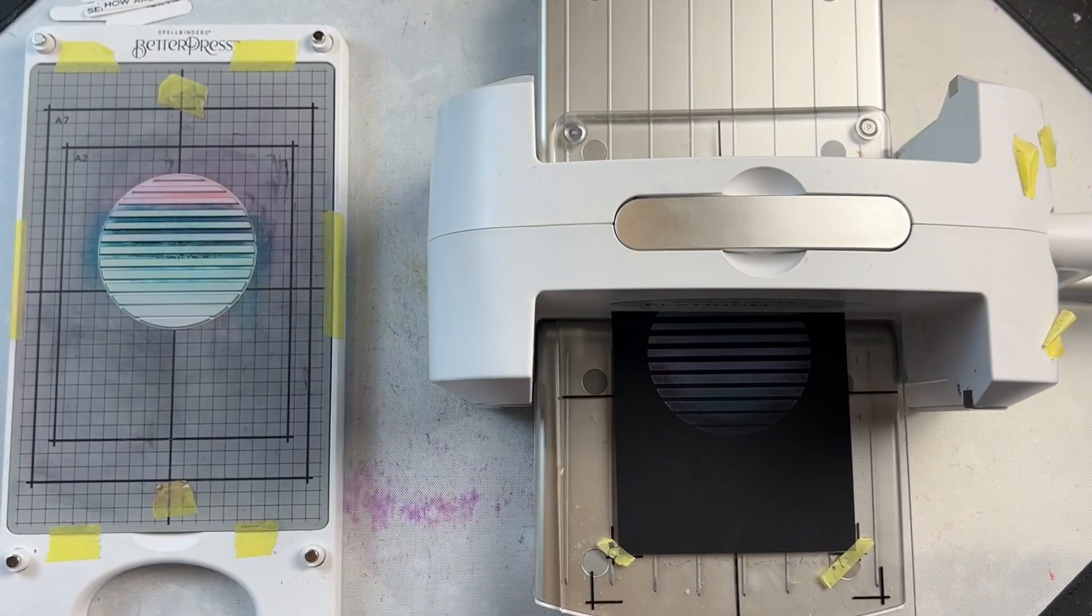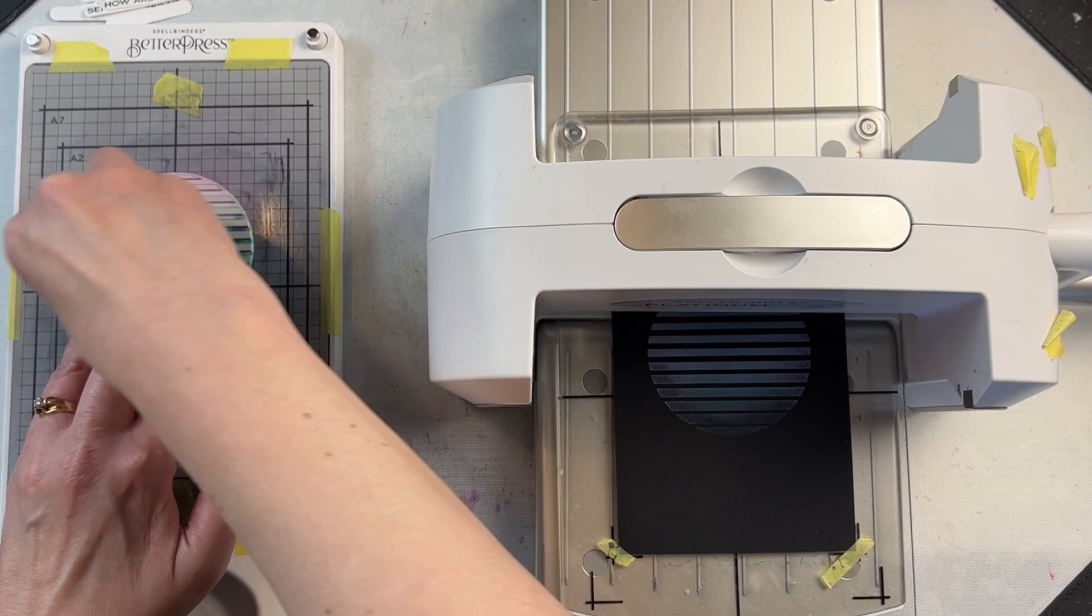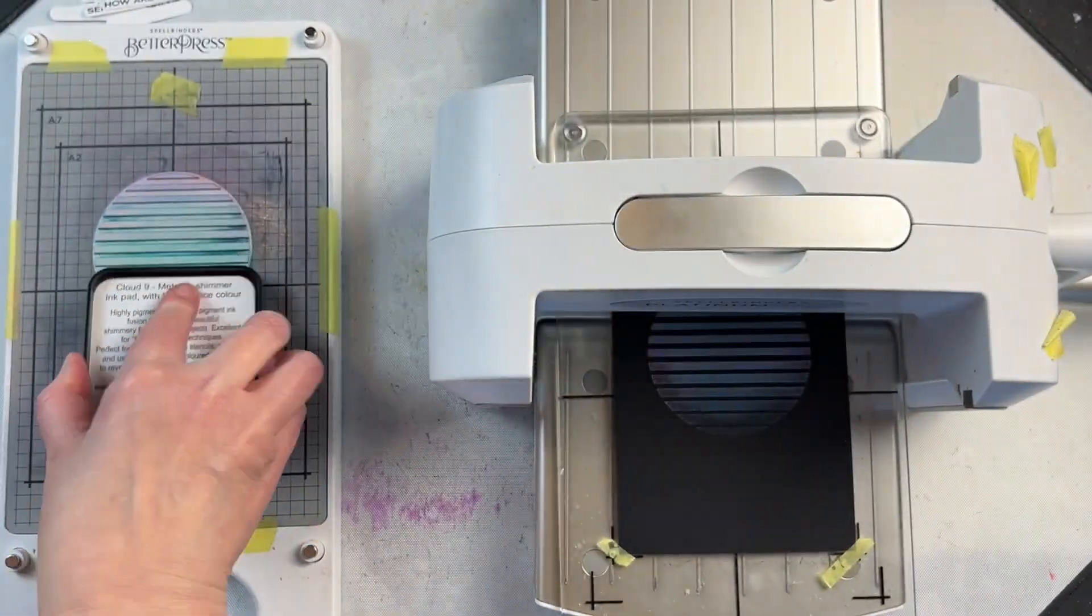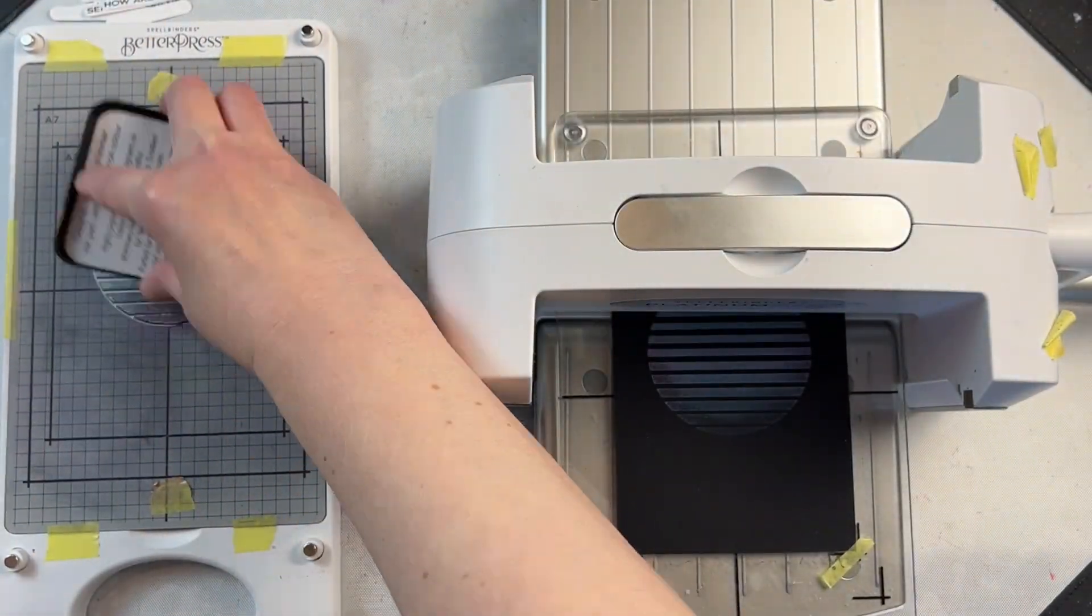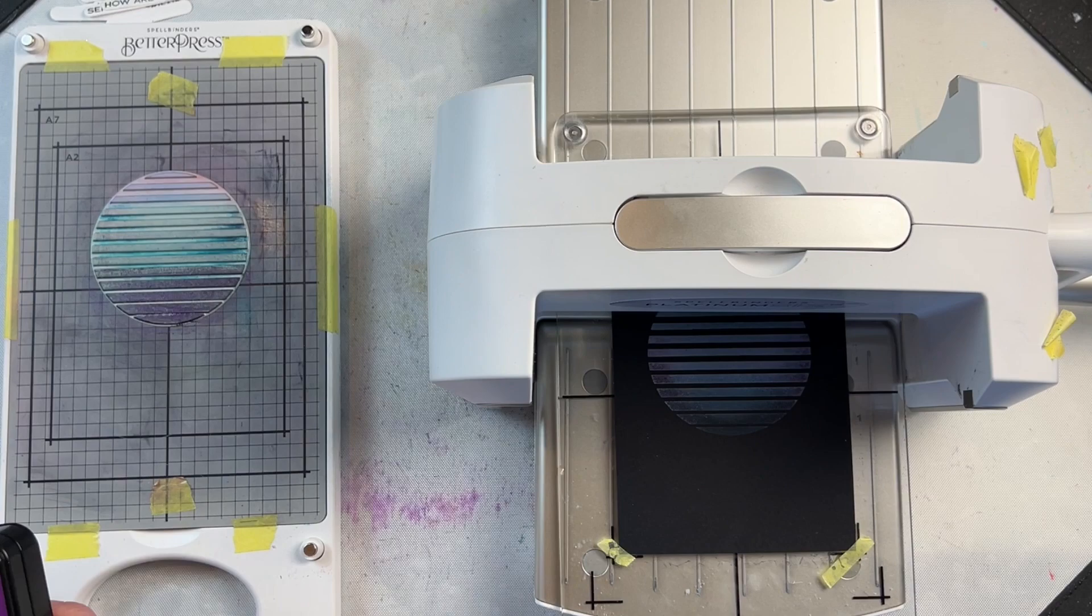By putting white ink down first, it lets me see the colored part of that ink on the black background. But you could easily do this on a white background and get the same ombre look.